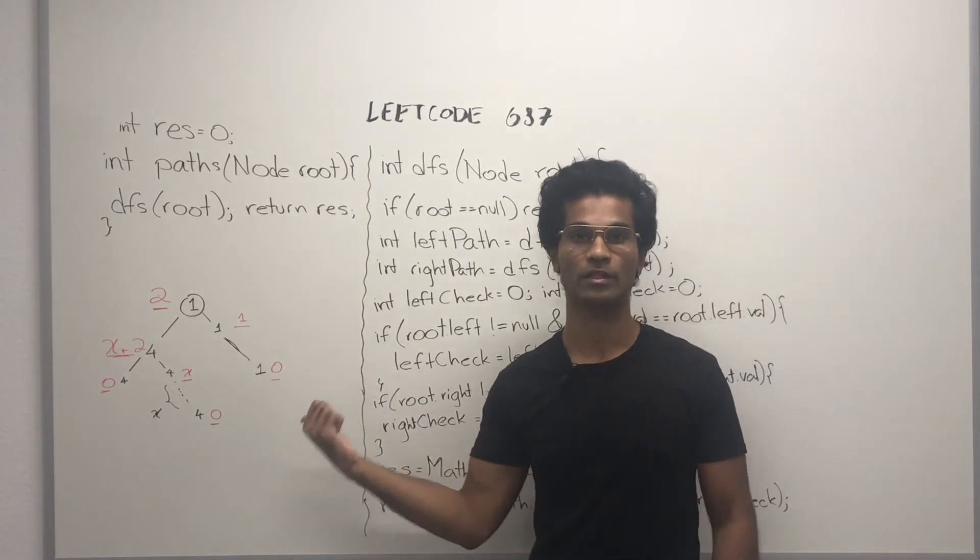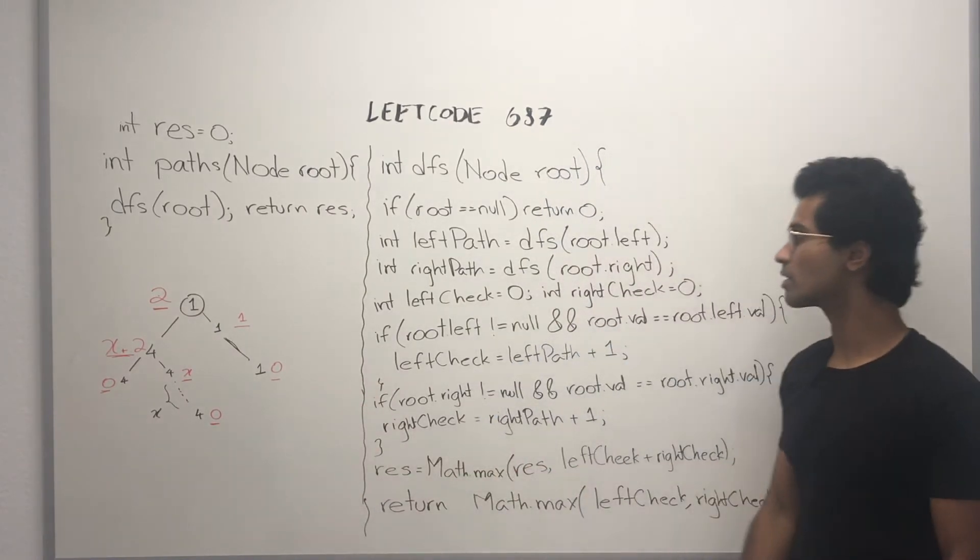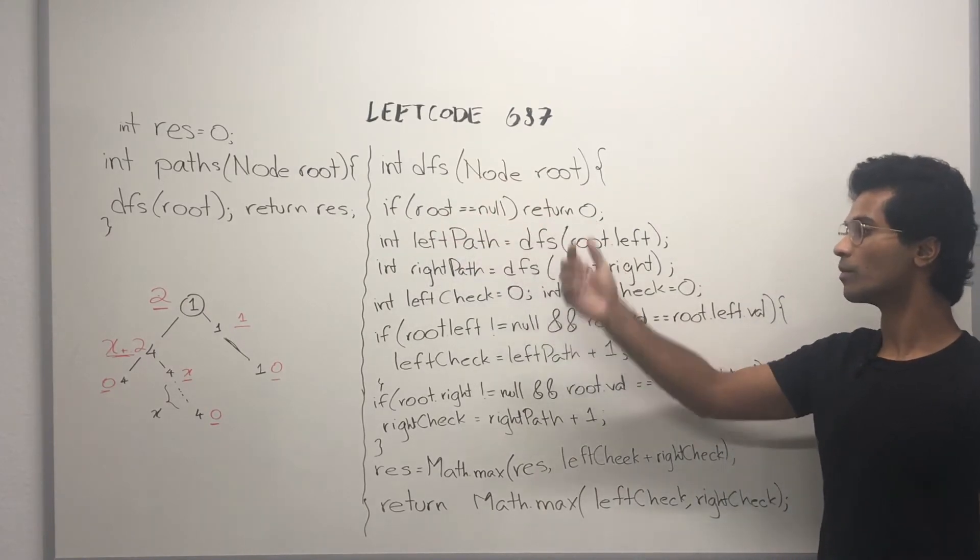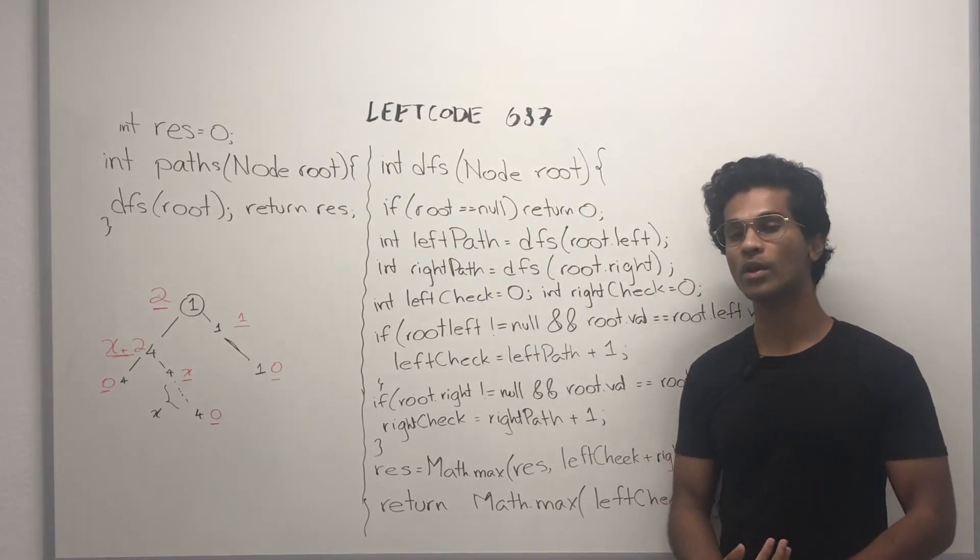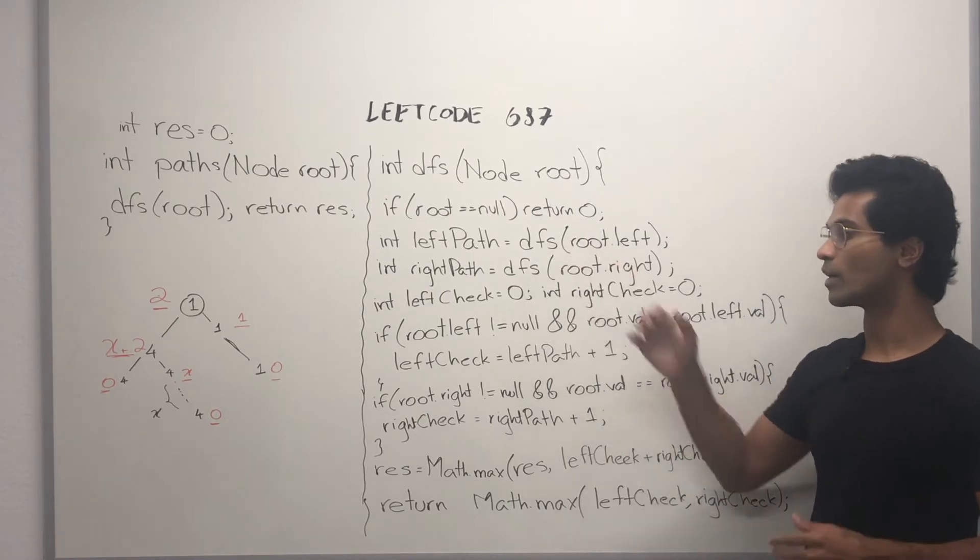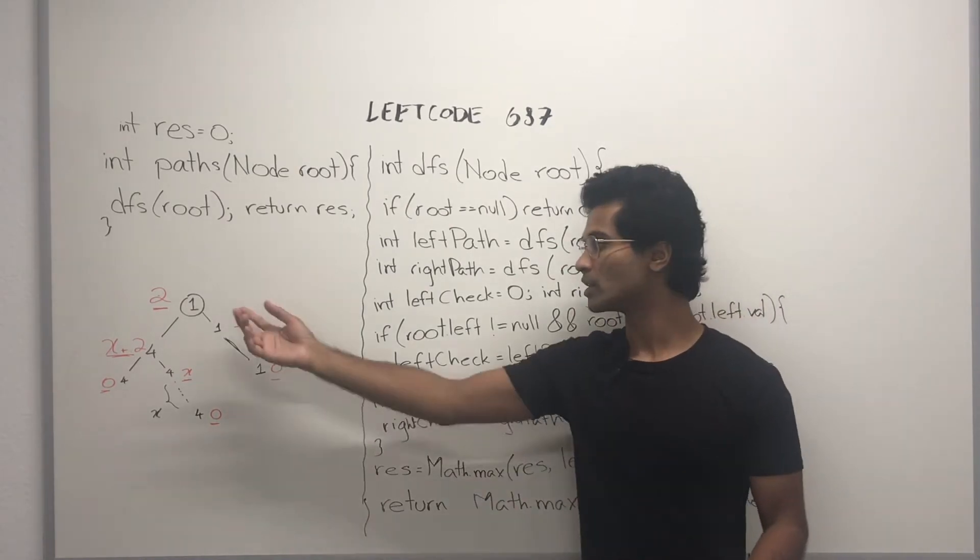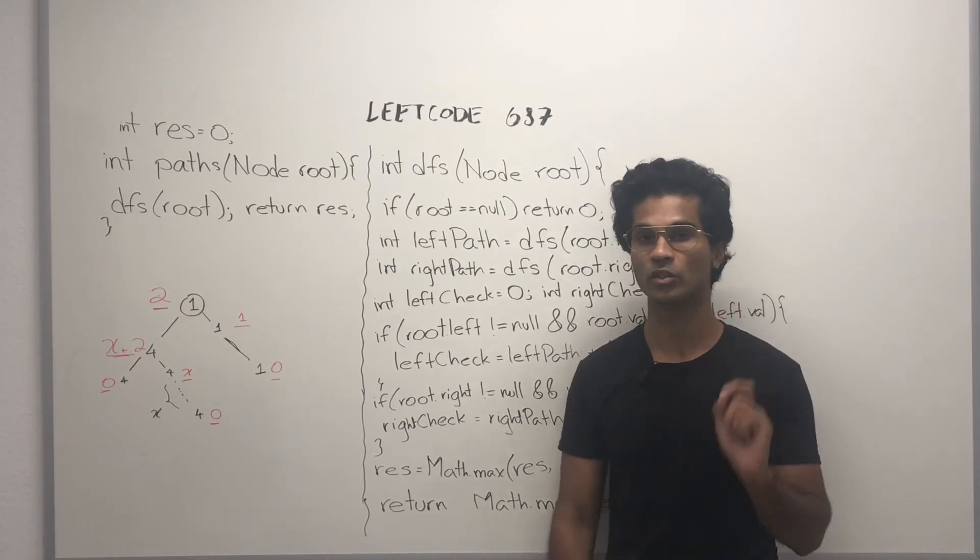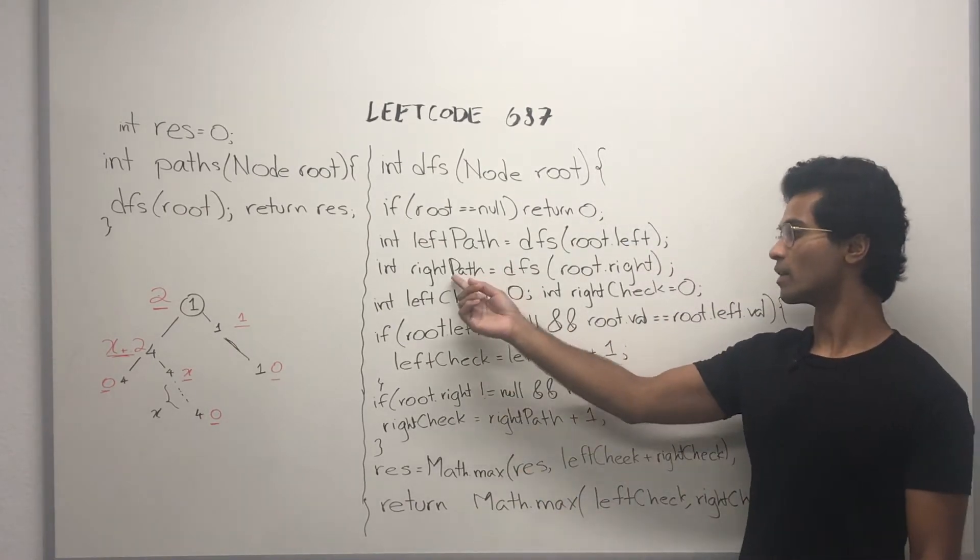This is the example I'm going to be using to step through. First, we take our DFS and if our root is null, we return 0. Otherwise, we are going to call our left and right child. So each node is going to call its left and right child and get a return value. We're going to temporarily store that in left path and right path.